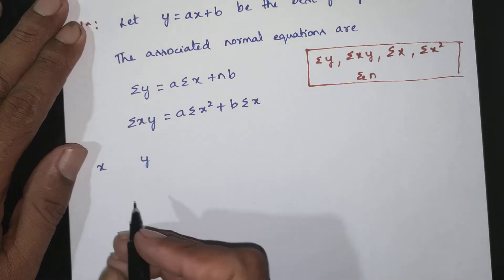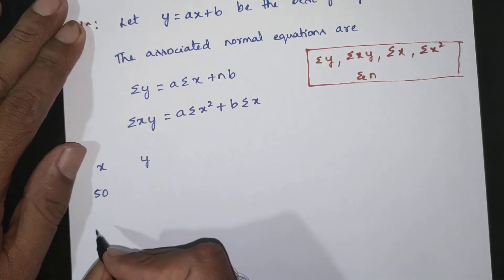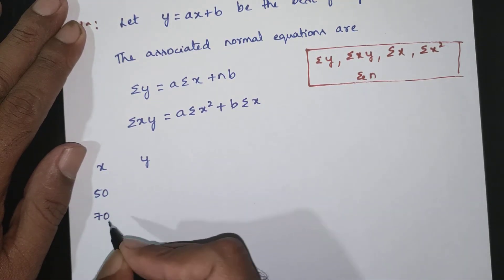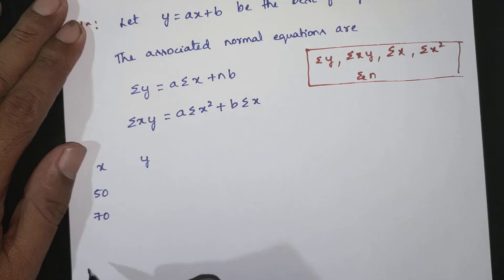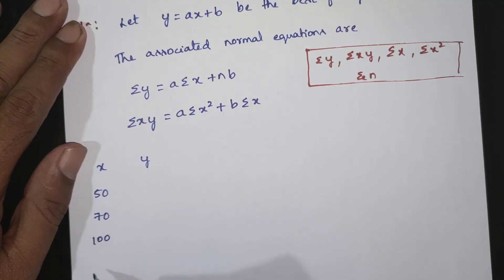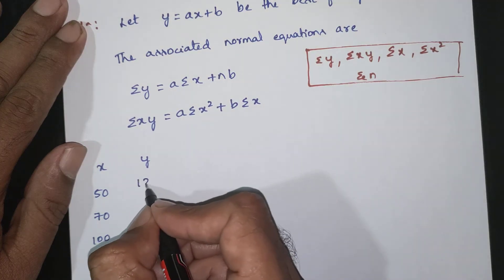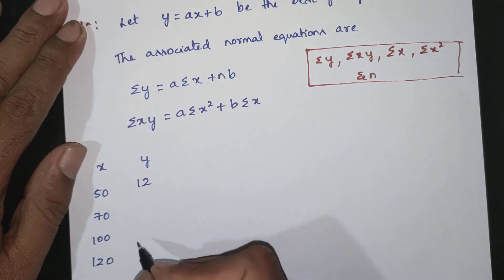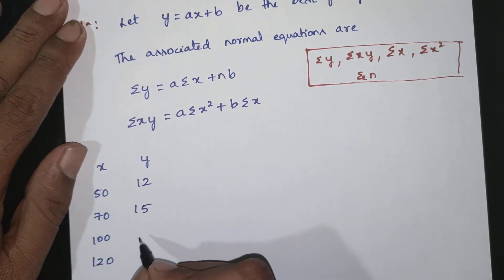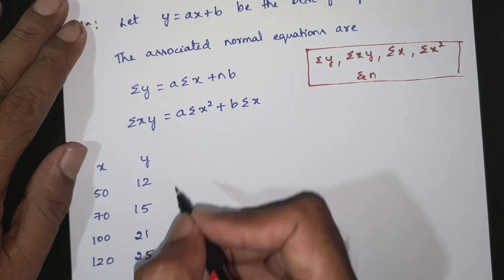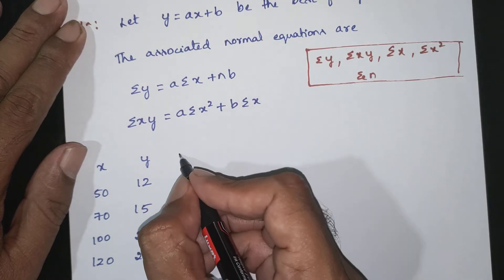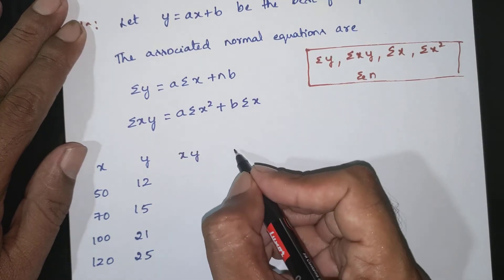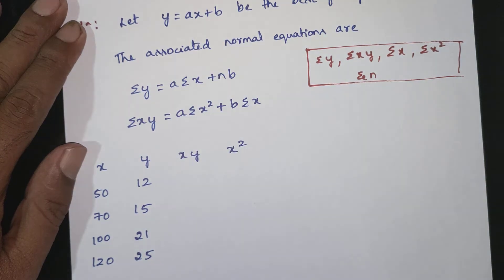x values: 50, 70, 100, 120. y values: 12, 15, 21, 25. Find xy and x squared.